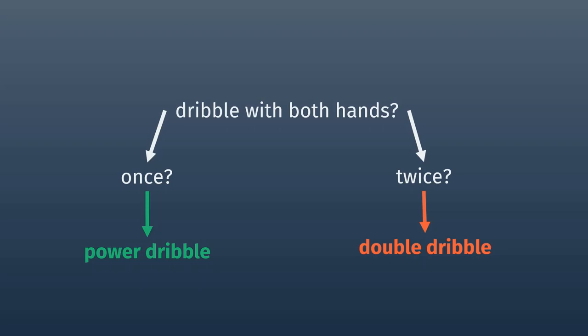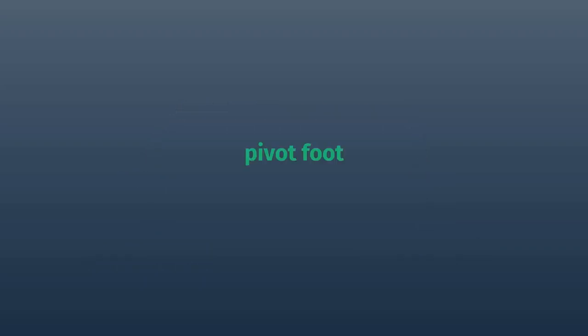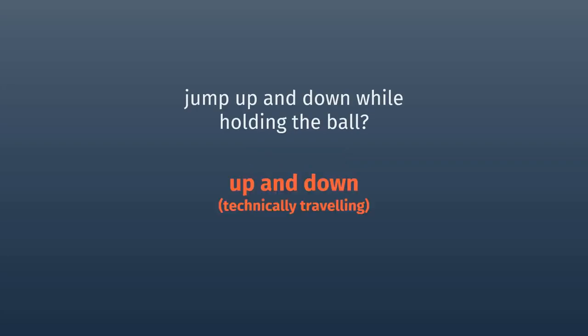Once you've stopped dribbling, either your right or your left foot must stay on the ground, but you can move the other one. The one that stays in the same spot is called your pivot foot. The only way your pivot foot can leave the ground is if you jump to shoot the ball or pass it to a teammate — because if you jump up with the ball and don't let it go before you land again, that's called up and down, and the other team gets the ball.